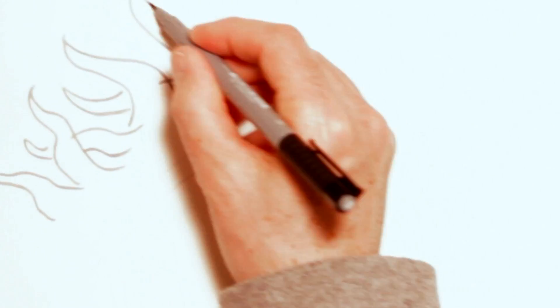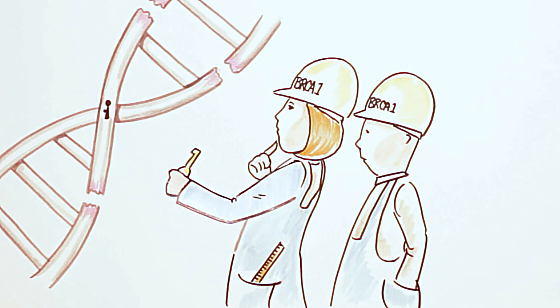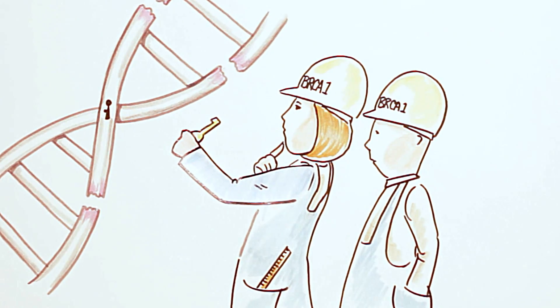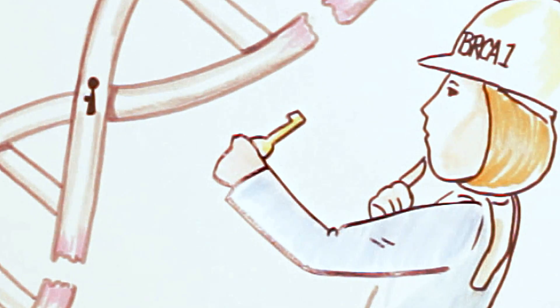Cancer cells also have ways of repairing damage to their DNA, which allows them to continue wreaking havoc within the body. In some cancer patients, however, mutations in the BRCA genes prevent the proteins from making repairs.